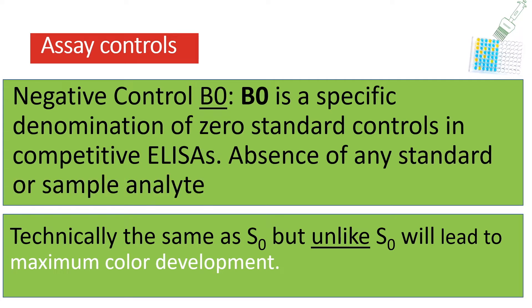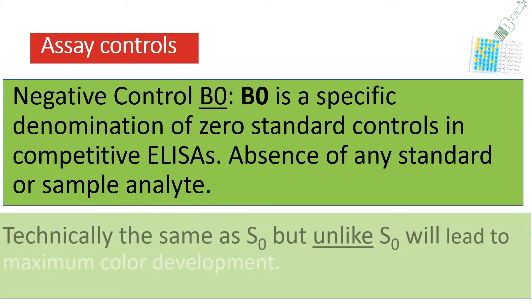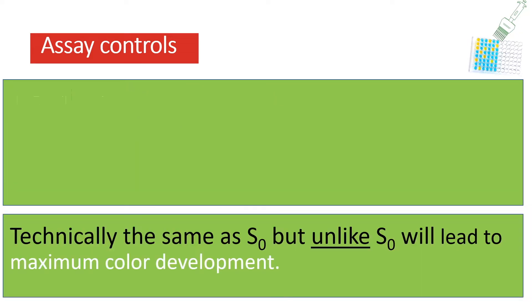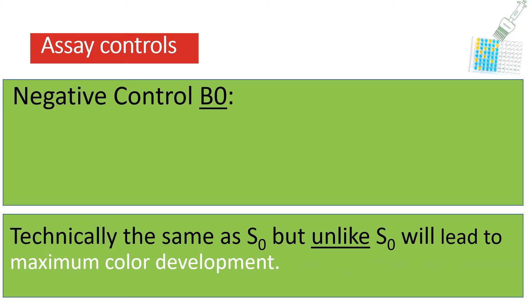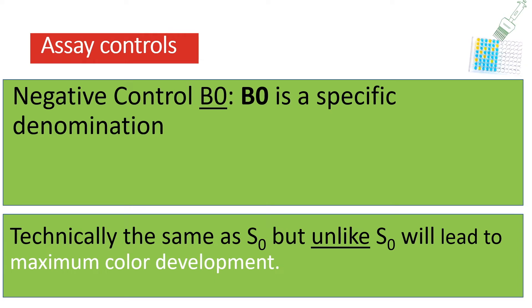In the context of negative controls, there is a B₀ (B-not) designation you may encounter, specifically in competitive ELISAs. B₀ refers to the zero standard well — the well where you did not include any standard from your serial dilution series. Its equivalent in a sandwich ELISA is the S₀. They have different designations because in a competitive ELISA, with no standard or sample analyte, that well leads to maximum color development, whereas in a sandwich ELISA the S₀ well produces the least color development.